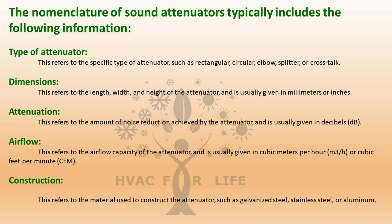Type of attenuator: this refers to the specific type such as rectangular, circular, elbow, splitter, or cross-top. Dimensions: this refers to the length, width, and height of the attenuator, usually given in millimeters or inches. Attenuation: this refers to the amount of noise reduction achieved by the attenuator, usually given in decibels (dB). Airflow: this refers to the airflow capacity of the attenuator, usually given in cubic meters per hour (M3H) or cubic feet per minute (CFM).